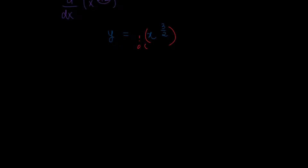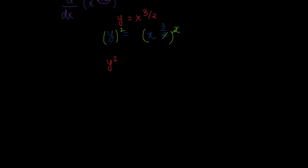The reason why we are squaring both sides is that the power involved here, 3 halves, has a 2 in its denominator. So if I square both sides, the right-hand side will have these 2's cancel out — remember, the powers will multiply. On the left-hand side we will have y squared. So this explicit function y equals x to the power of 3 halves converts into an implicit definition: y squared equals x cubed.